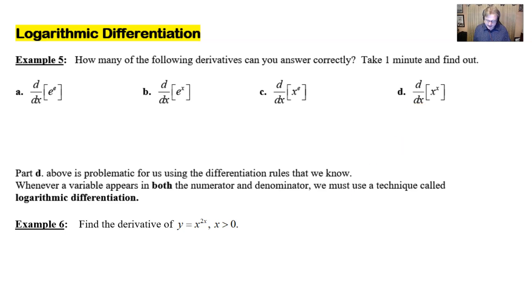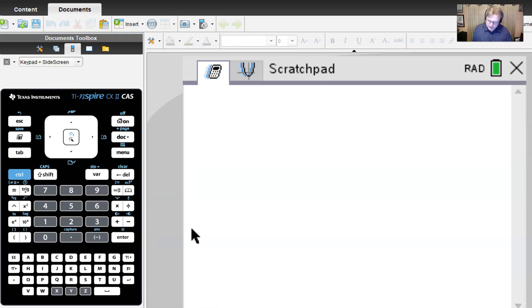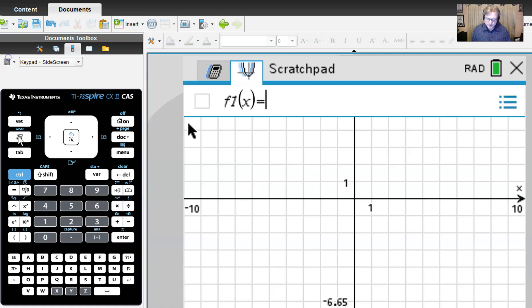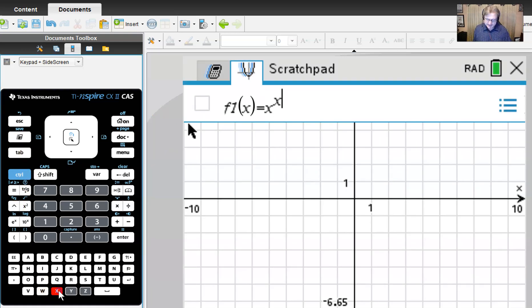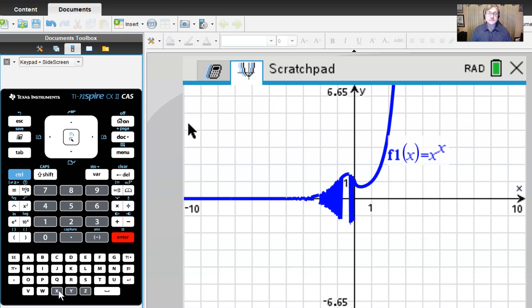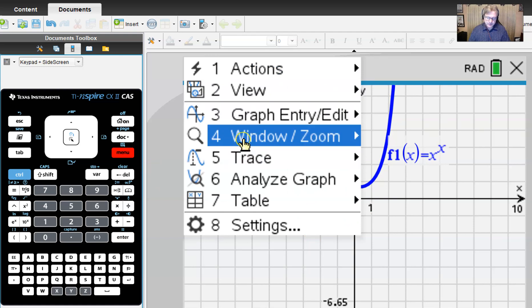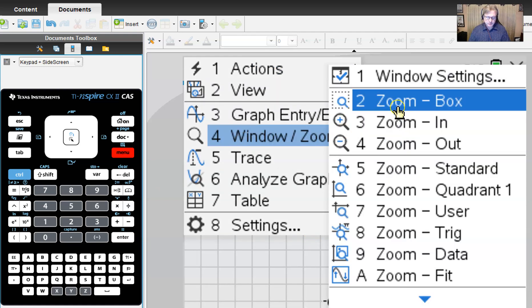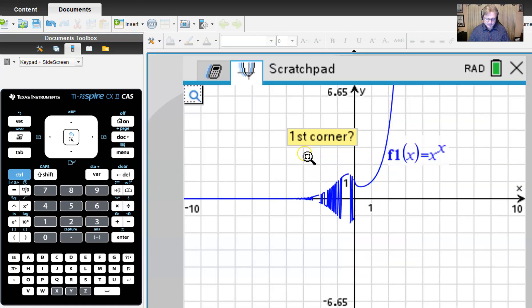I'm just going to move over to my graphing software here. Here we are with our TI-Nspire graphing software. I'm going to turn this over to a graphing page and enter x raised to the x and see what we've got. What we've got is something that's very unusual. It's definitely worth taking a look at what's going on in this particular region. I'm going to change my view to zoom in using a box.